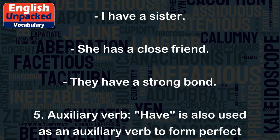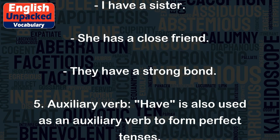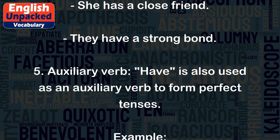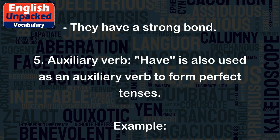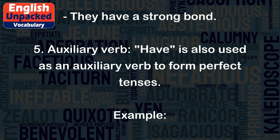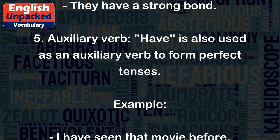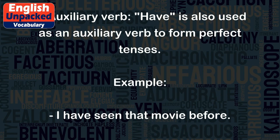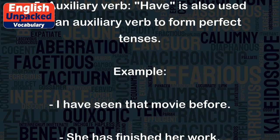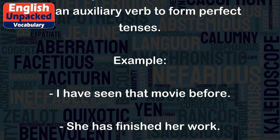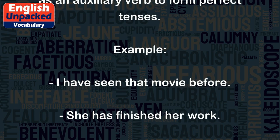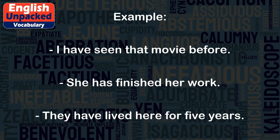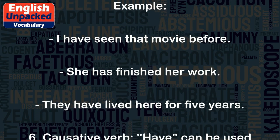5. AUXILIARY VERB. HAVE is also used as an auxiliary verb to form perfect tenses. Example: I have seen that movie before. She has finished her work. They have lived here for 5 years.